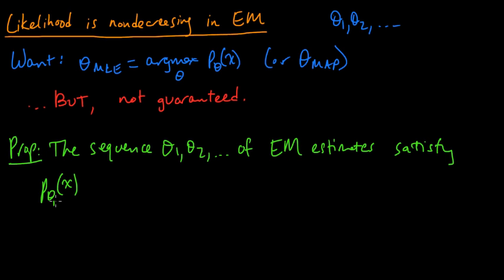They satisfy that they are non-decreasing, it's a non-decreasing function. The probability of X under theta1 is less or equal to the probability of X under theta2, is less or equal to under theta3, and so on.